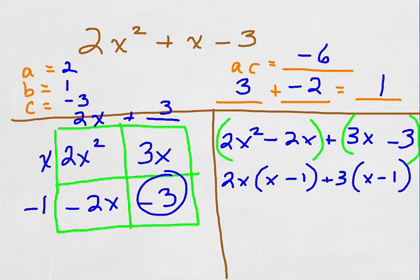But in the grouping method I'm going to be taking a look at a new GCF which is a binomial x minus 1. And I'm going to factor that out.